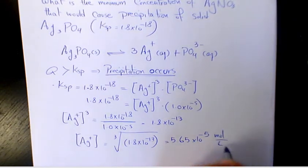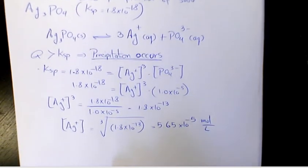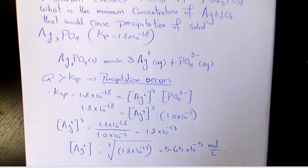That's going to be the concentration of silver ion. If it gets greater than this amount, precipitation of silver phosphate will occur. If the concentration of Ag+ is less than this concentration, precipitation will not occur.